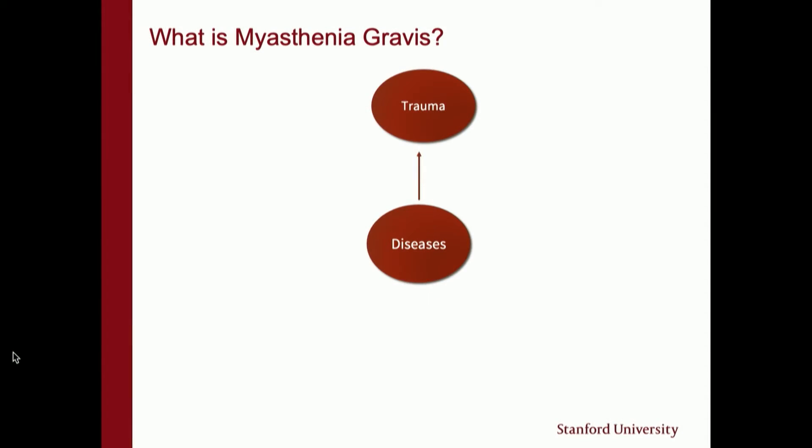One disease state is trauma — everyone's familiar with that. You get into a car accident or maybe you fall down. Why is it important to think about disease that way? Because we have to know the cause or the group of disease so we can think about treating it. You wouldn't treat one set of diseases the same as another. If you're in a bad car accident, you're rushed to the emergency room, doctors will stabilize you, give you fluids, maybe do surgery.